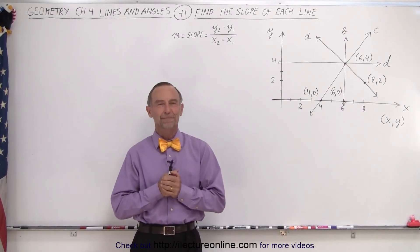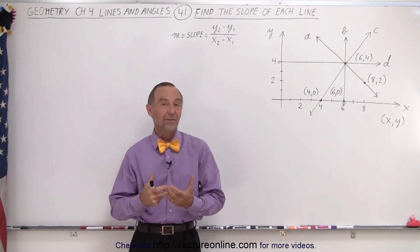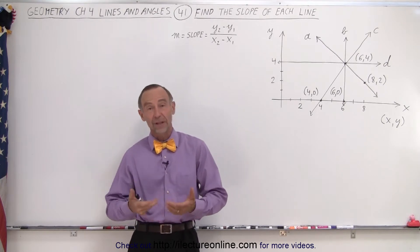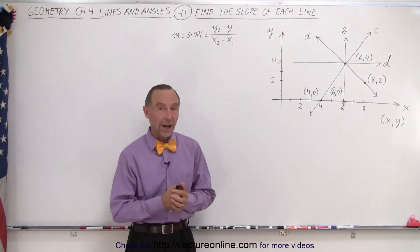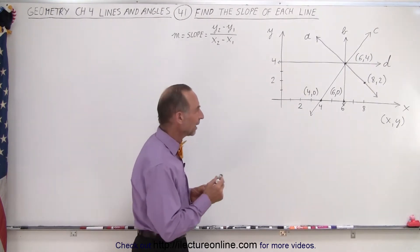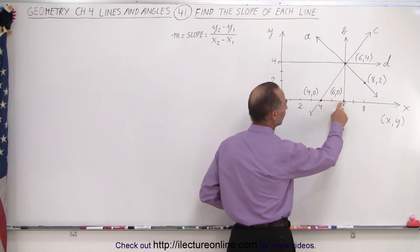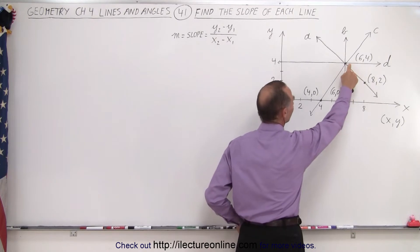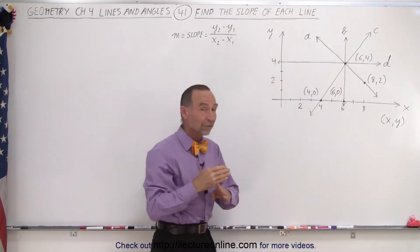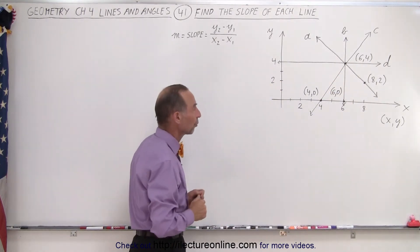Welcome to our lecture online. Now let's try an exercise of finding the slope of a few lines. Here we have a graph that gives us four lines and some specific points on the graph. We have the point (4,0), (6,0), (8,2), and (6,4). Notice that all four lines pass through the point (6,4).